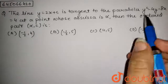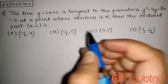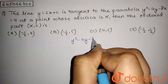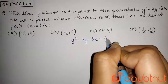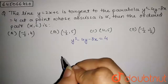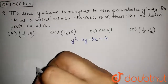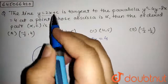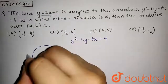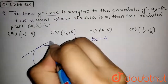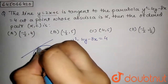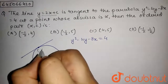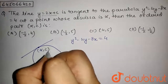We have the parabola y² - 4y - 8x = 4. This parabola has a certain shape and this line is tangent to it. Let the tangent be this line, and the meeting point will be (alpha, c).